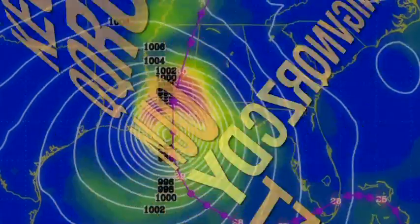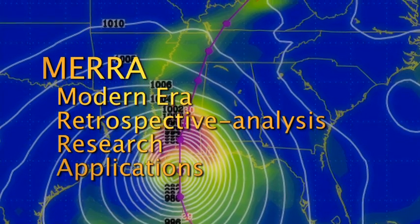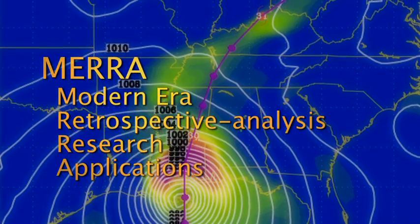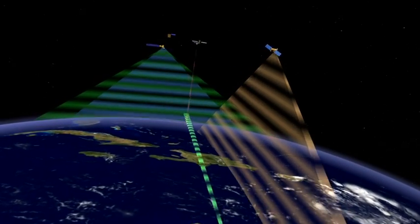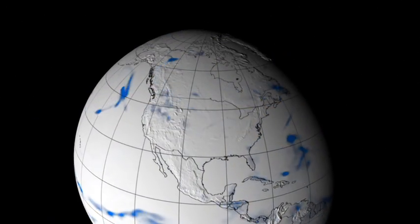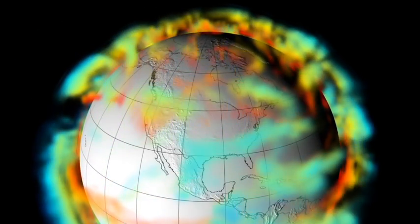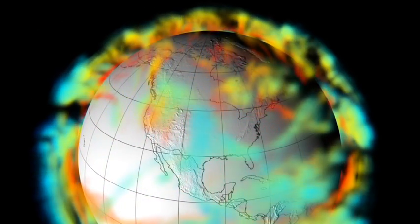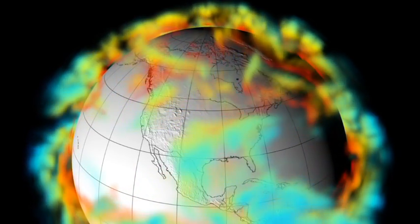One example of this technique is MERRA, the Modern Era Retrospective Analysis for Research and Application. MERRA incorporates data from the entire satellite record — over 30 years of data. Its results are a data encyclopedia that can be used for research and analysis, helping meteorologists understand the variations associated with specific weather events in the past.